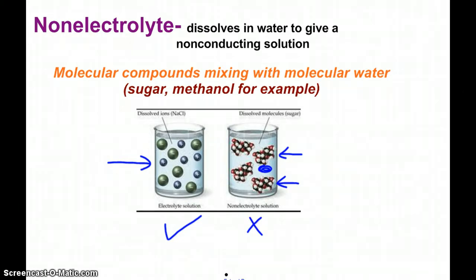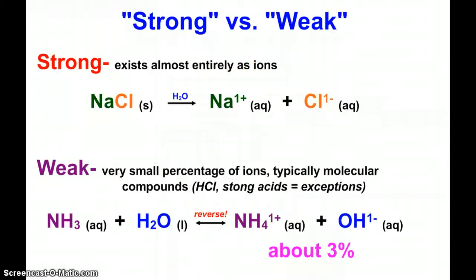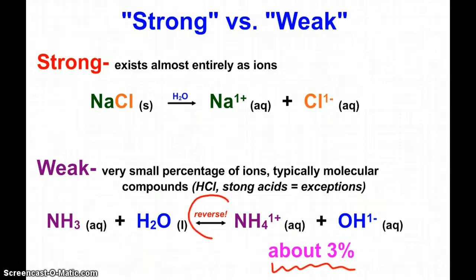When electrolytes dissolve in water and produce ions, they do so to varying extents, so we call them either strong or weak electrolytes. A strong electrolyte exists almost entirely as ions — as soon as we put sodium chloride into water, it breaks apart into sodium and chloride ions and stays that way almost exclusively. A weak electrolyte shows a very small percentage of ions, more typical of molecular compounds. Ammonia, for example, when put into water forms ammonium and hydroxide ions, but only about 3%, because the reverse reaction is stronger and more favorable.